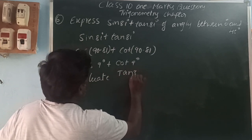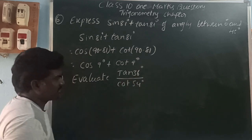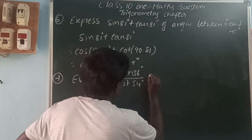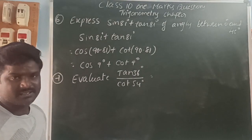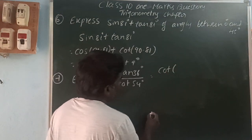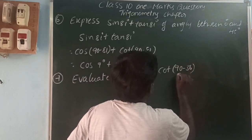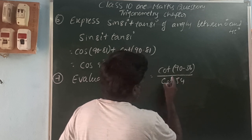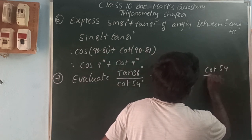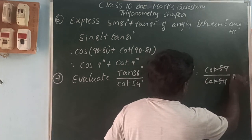Next: find the value of tan 36° divided by cot 54°. Since 36 and 54 are complementary angles, we can write tan 36° as cot of 90 minus 36, which is cot 54°. So the expression becomes cot 54° divided by cot 54°. The numerator and denominator are the same, so the value is 1.